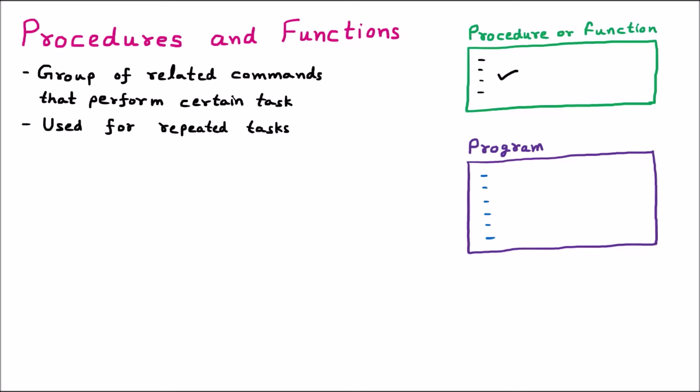If in a program I have to make the sum of two numbers nine times, I will not write this line nine times; I will simply make the function or the procedure for that. The benefit of that is we are having modularity, which is very easy to maintain. Whenever we are breaking a program into multiple parts that is called modular. We can see there are two parts: the procedure or function, and the program. So it is very easy to understand and easy to debug.